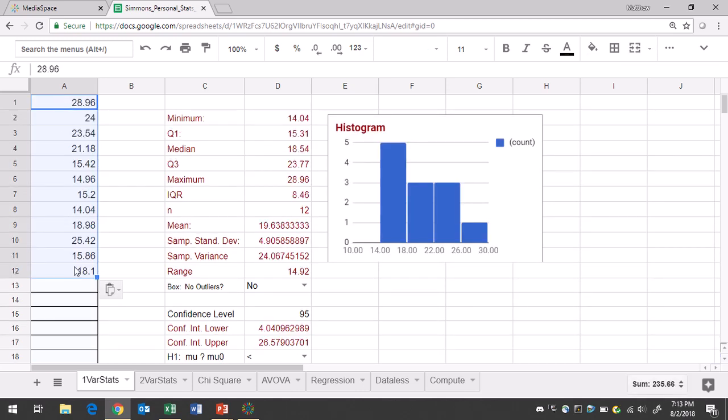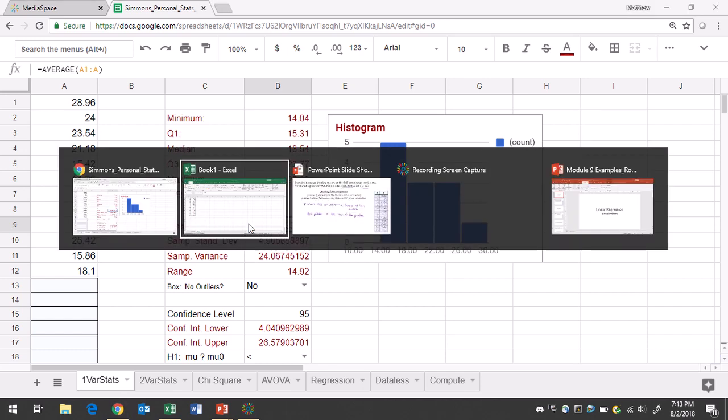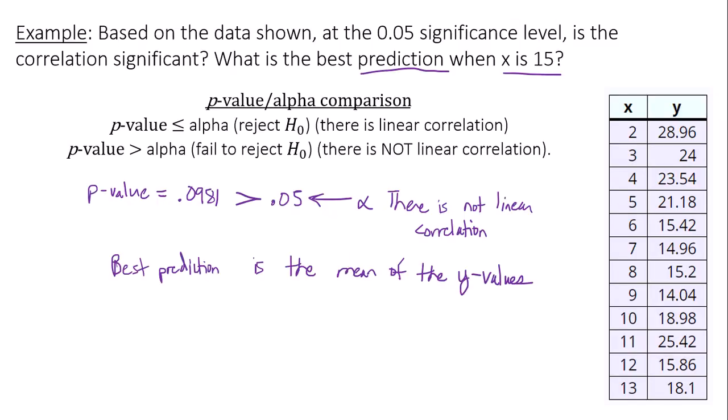So I'm pasting the Y values in column A, and I'm only concerned with the mean, the average of the Y values here. The average is about 19.64. So 19.64 is the best prediction, the mean of the Y values.